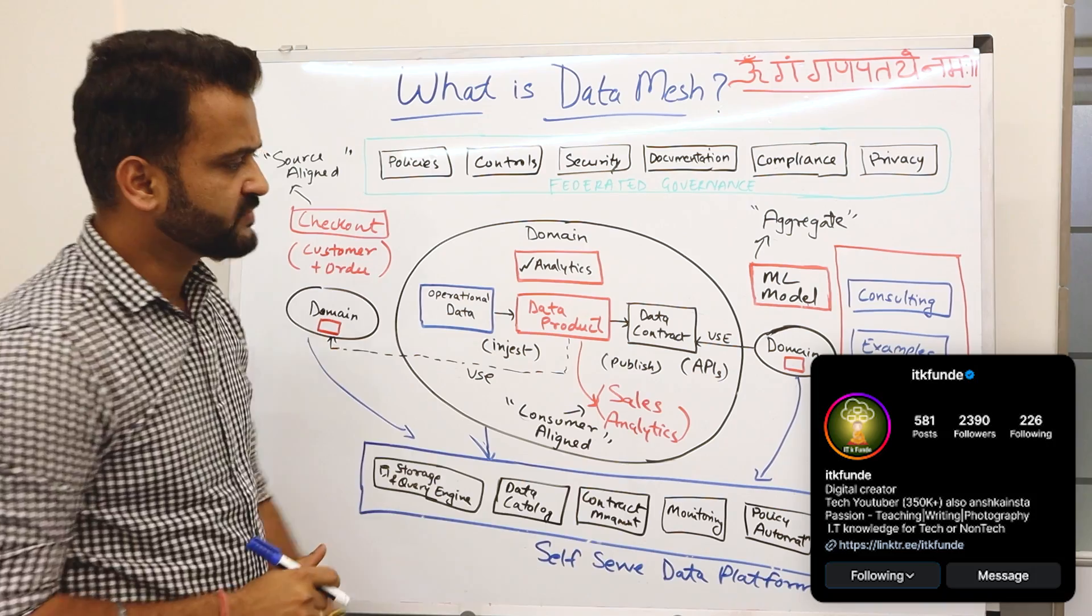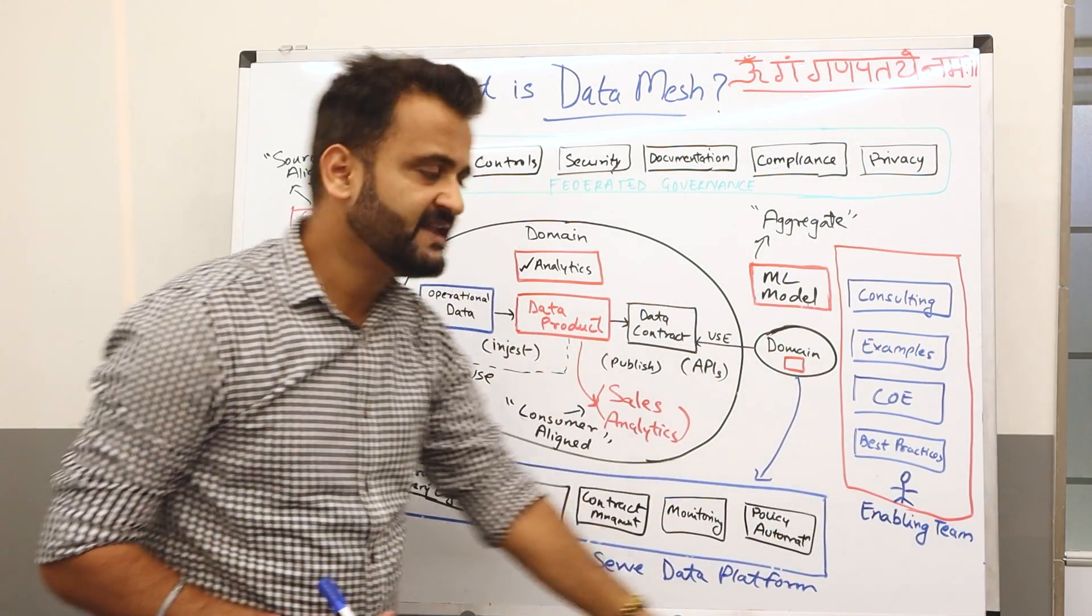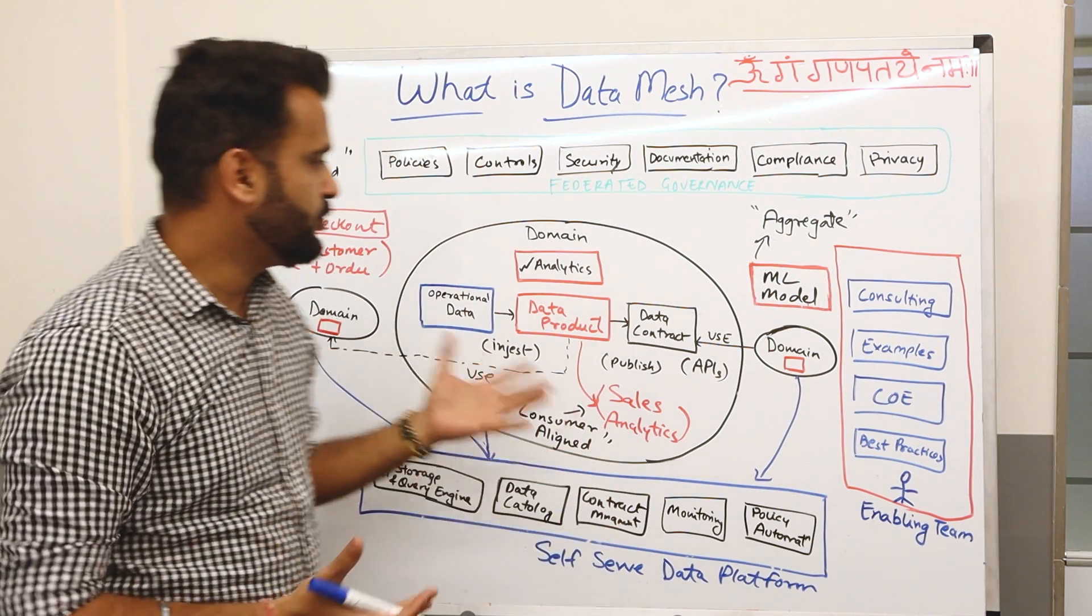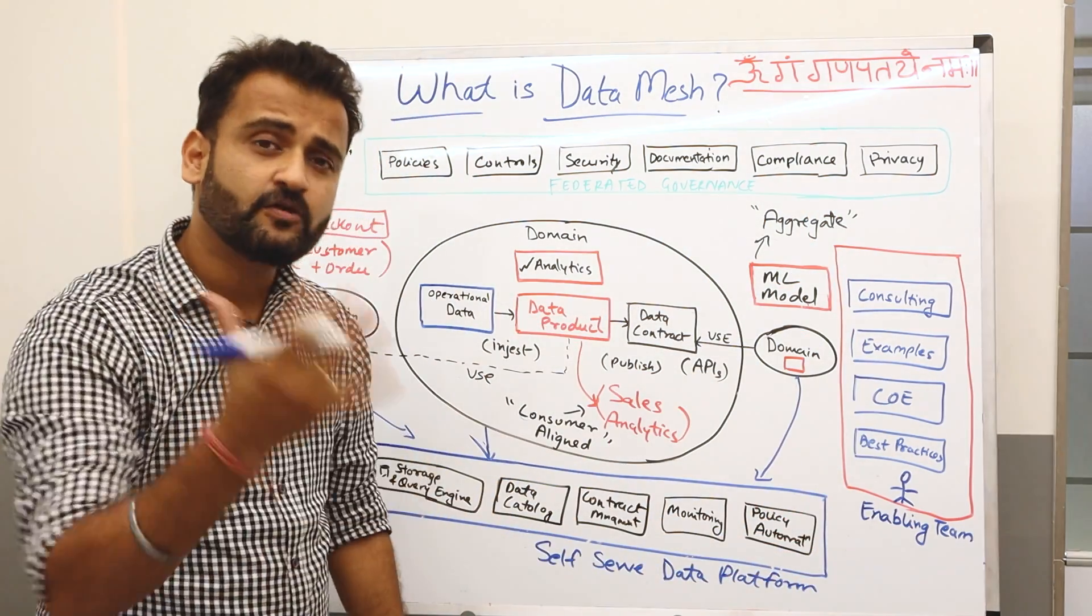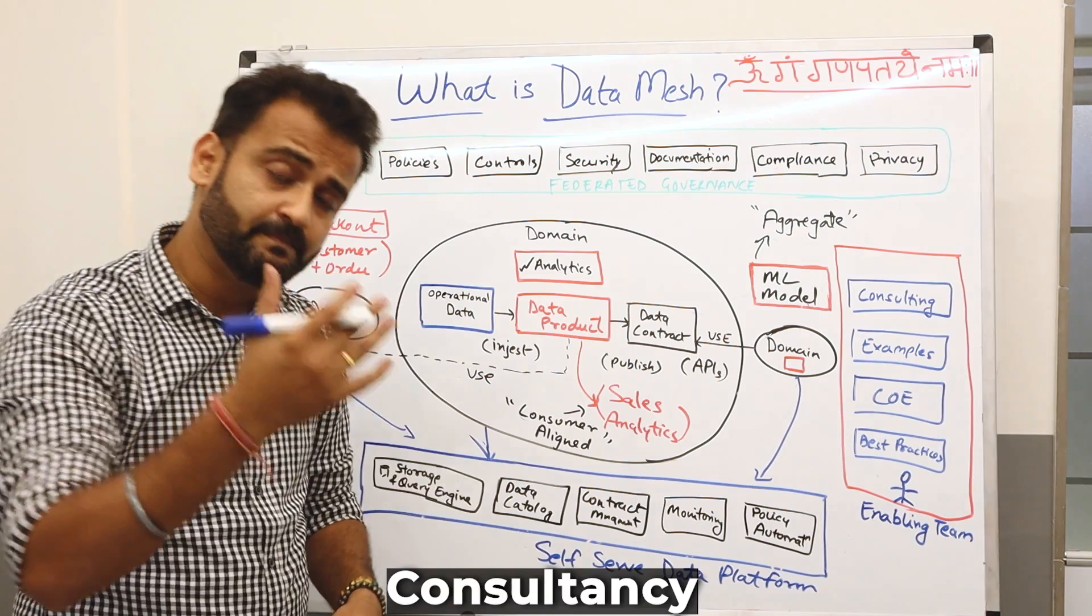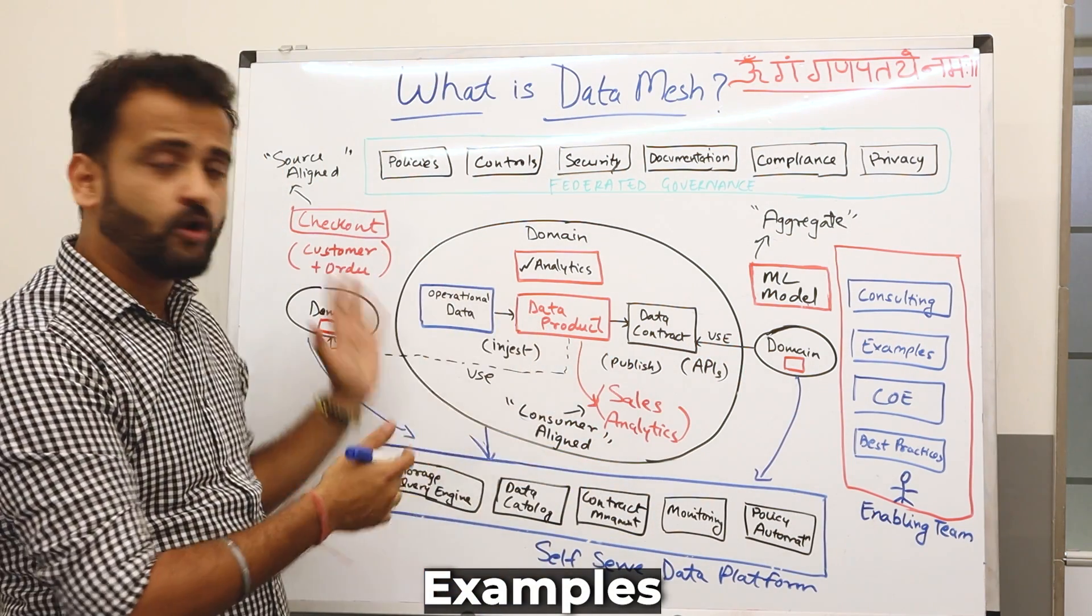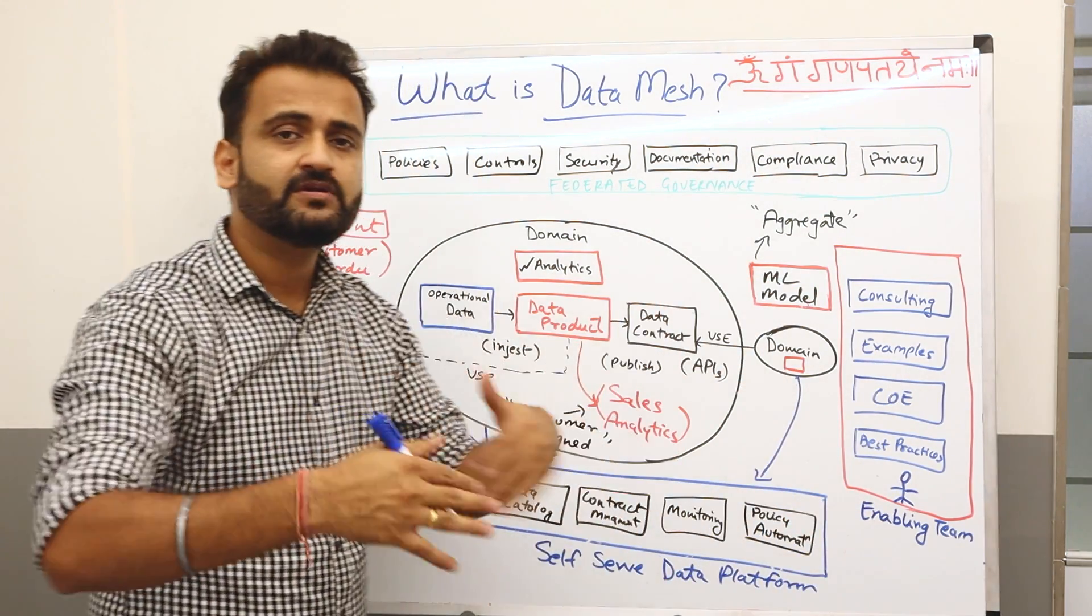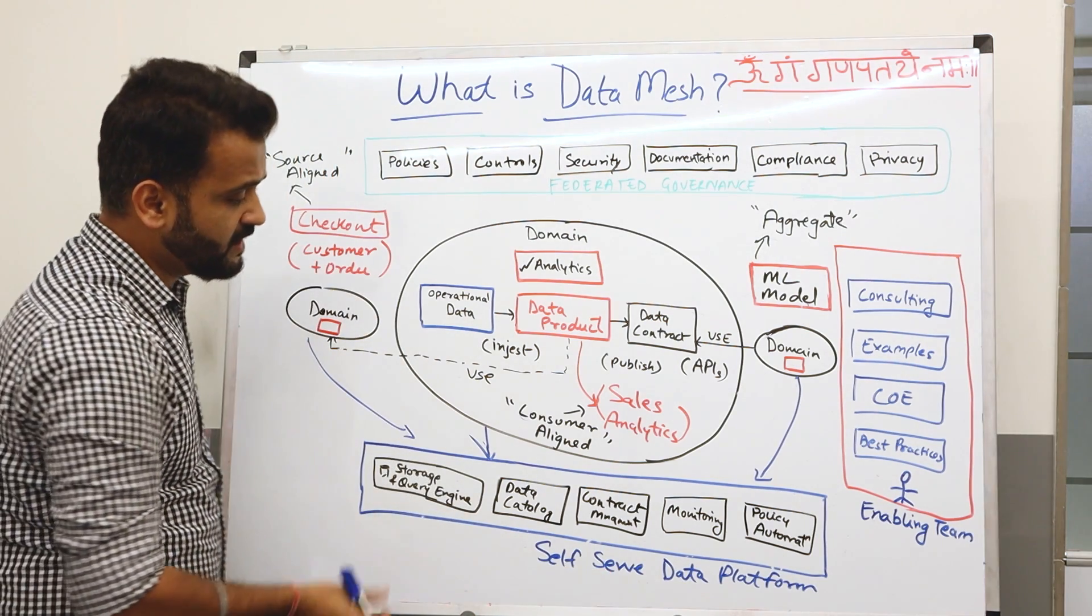On this left side, this is the enabling team. Obviously if you have to implement Data Mesh, you know, these domain teams won't have those capabilities right from the beginning. So this would be made kind of a center of excellence team which will be providing the consultancy, best practices, examples for this particular domain or for all the domains. It will sit across all the domains and help them start their journey building data meshes.